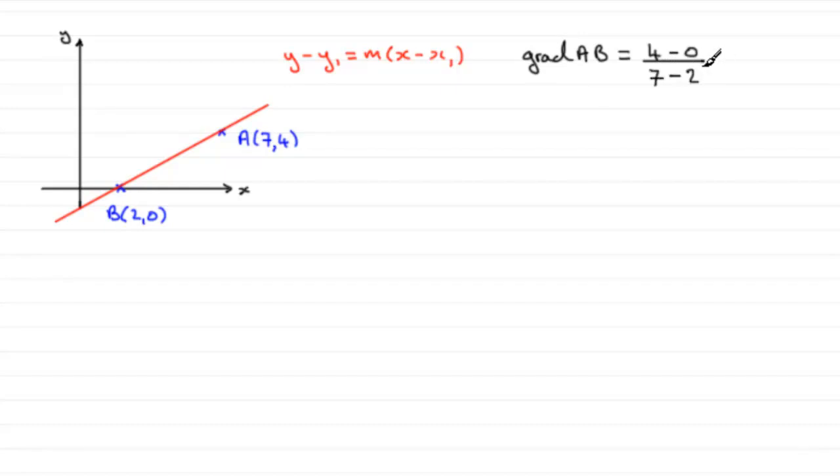And you can experiment if you like. You get exactly the same answer if you did 0 minus 4, as long as you do it divided by 2 minus 7. So it doesn't matter which way you attempt to do that. Okay, so what we've got here is a gradient then of 4 over 5, 4 fifths.